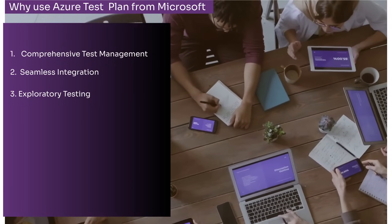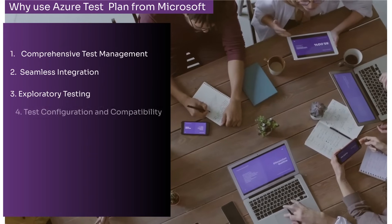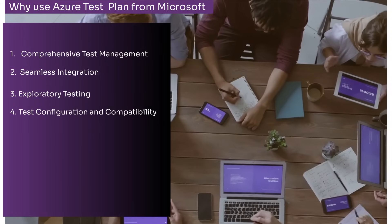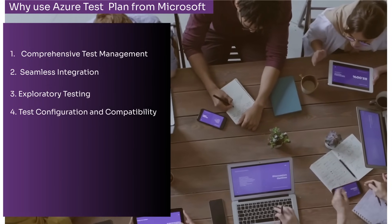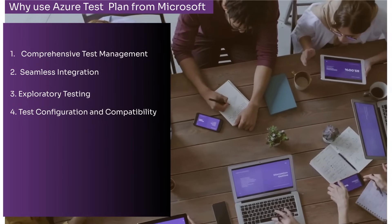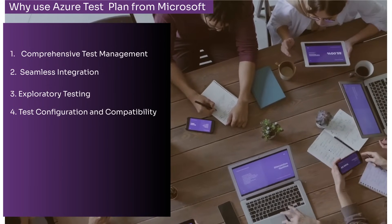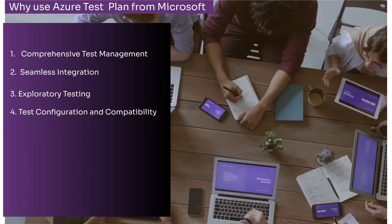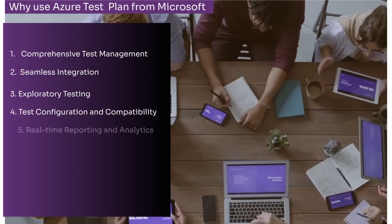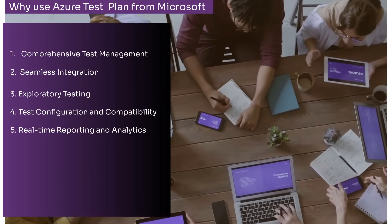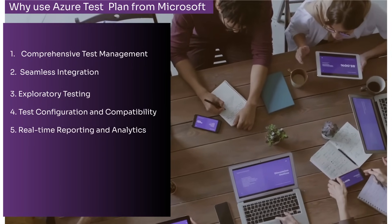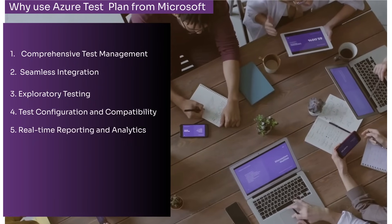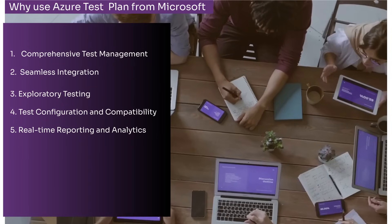The fourth point is Test Configuration and Compatibility: it allows running tests across multiple configurations, for example OS, browsers, and devices, ensuring applications are thoroughly tested for compatibility. The fifth point is Real-time Reporting and Analytics: it provides detailed insights into testing progress, defect trends and coverage metrics, enabling stakeholders to track quality and make informed decisions.